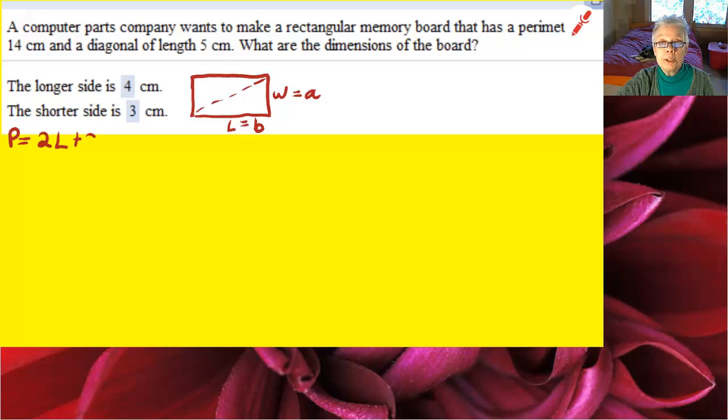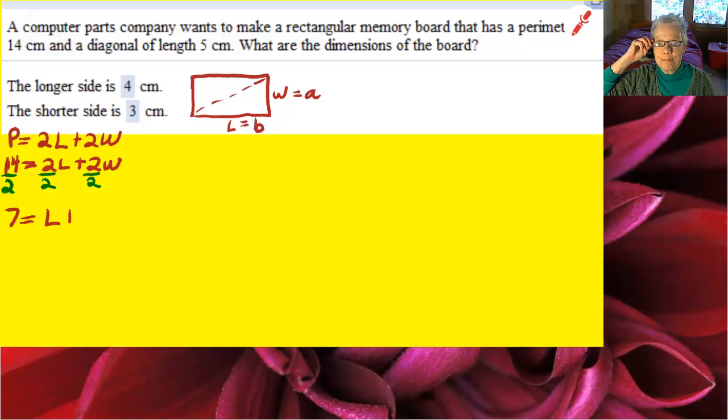We're told the perimeter, so I am going to write the perimeter formula. P equals 2L plus 2W and we're told that the perimeter is 14. So I'll say 14 equals 2L plus 2W. Now because each of the numbers in the formula is divisible by 2, I'll divide by 2 to make my number smaller. That will always make everything better. This is our perimeter formula.